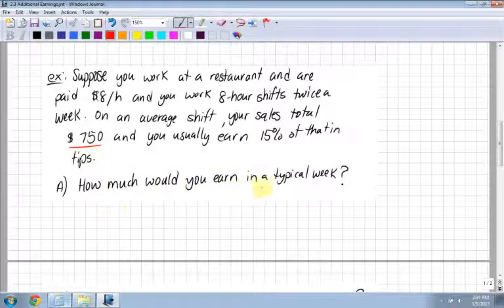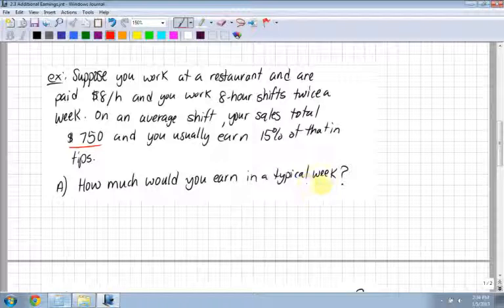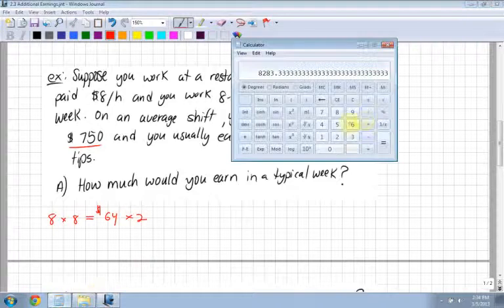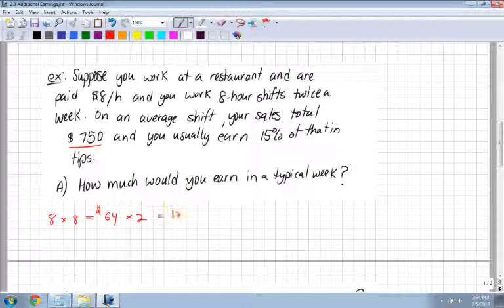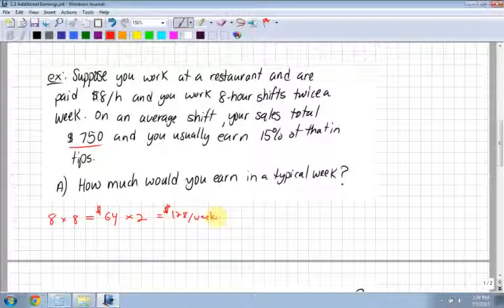How much would you earn in a typical week? You're working 8 hours per shift at $8 per hour, so 8 times 8 is $64 per shift. Now you do this twice a week, so multiply by 2—64 times 2 is $128 per week.